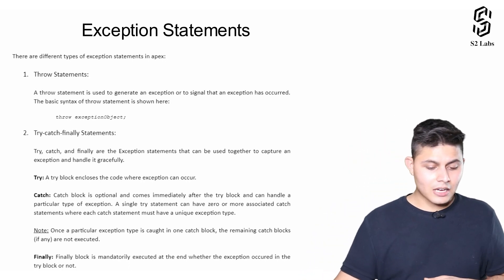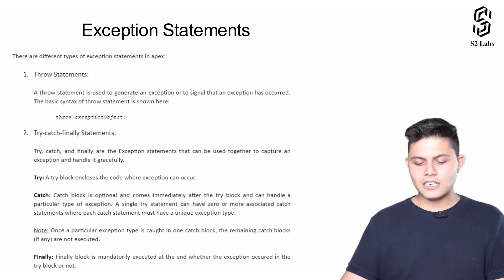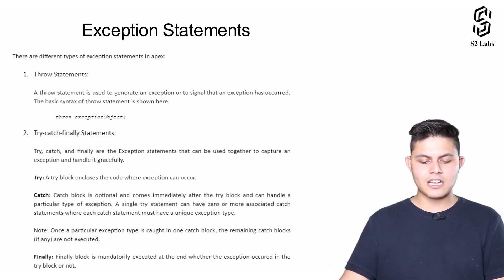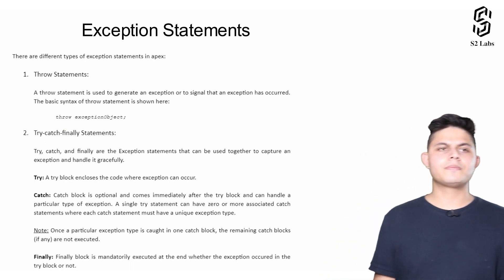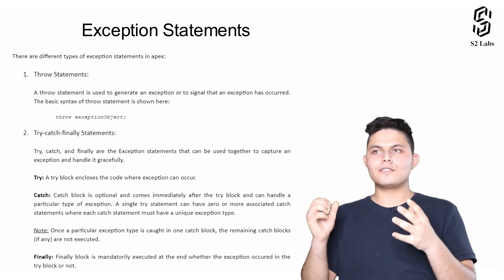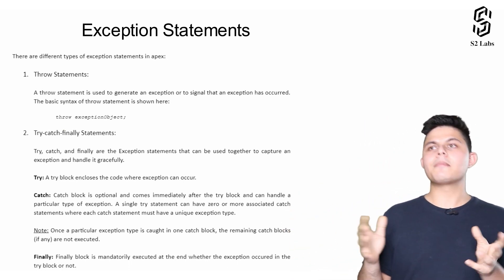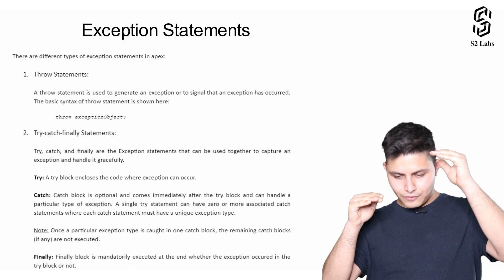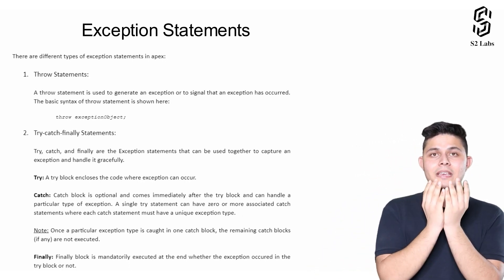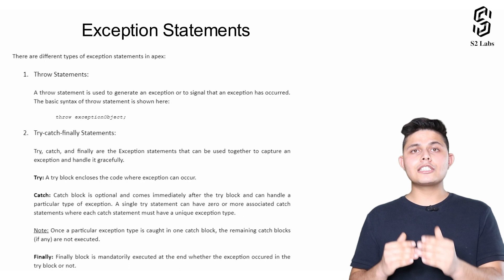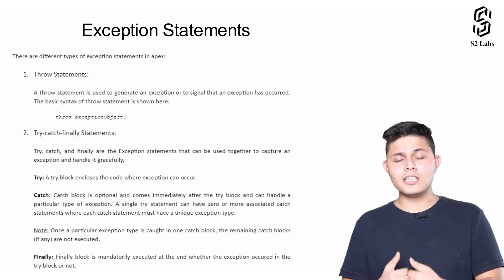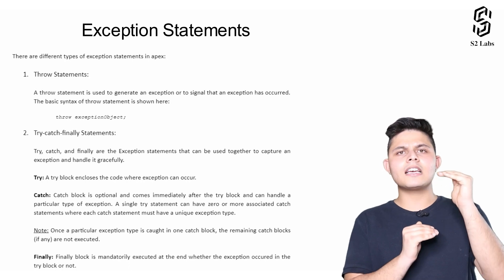A catch block is optional and comes immediately after the try block, and can handle a particular type of exception. A single try statement can have zero or more associated catch statements, where each catch statement must have a unique exception type. Think of it like American football — the place where you throw the ball is the try block, and the place where the ball needs to be caught and handled is the catch block. Inside the catch block you accept a particular type of exception and write the code to handle it.